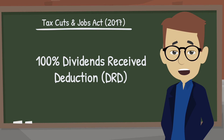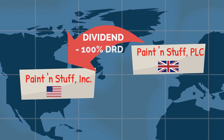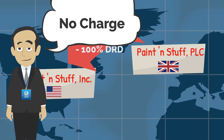The 100% DRD is intended to offset taxable income that results from receiving a dividend from foreign corporations or businesses. The domestic company is still taxed on that dividend as we discussed before, but now it may be able to neutralize the U.S. tax impact to the extent this deduction is available.